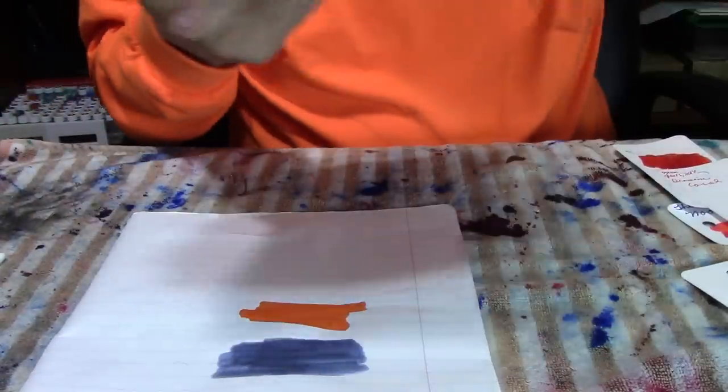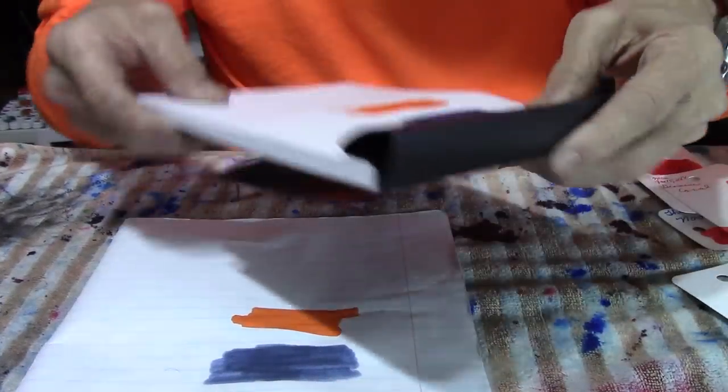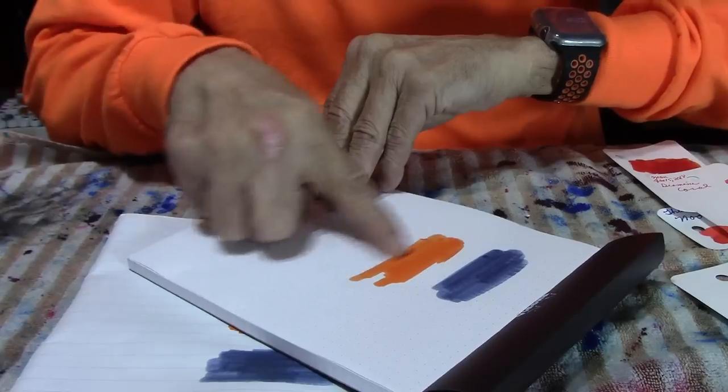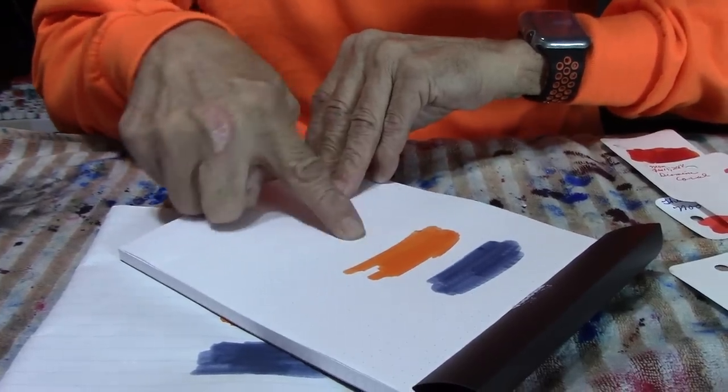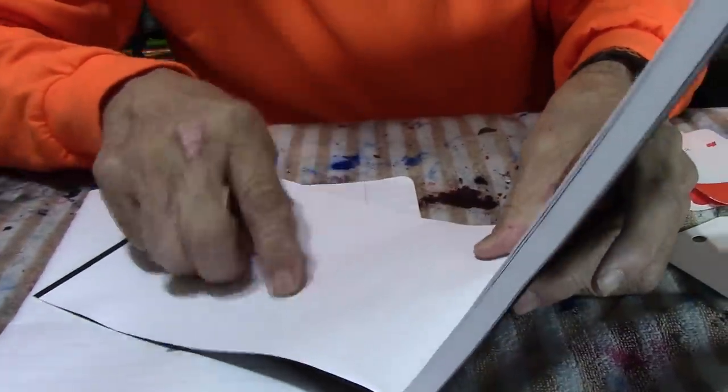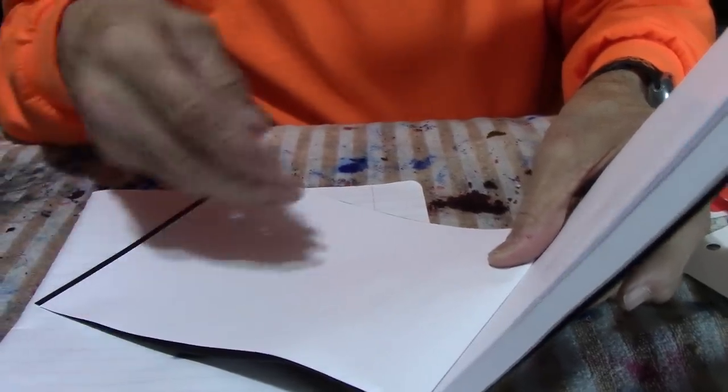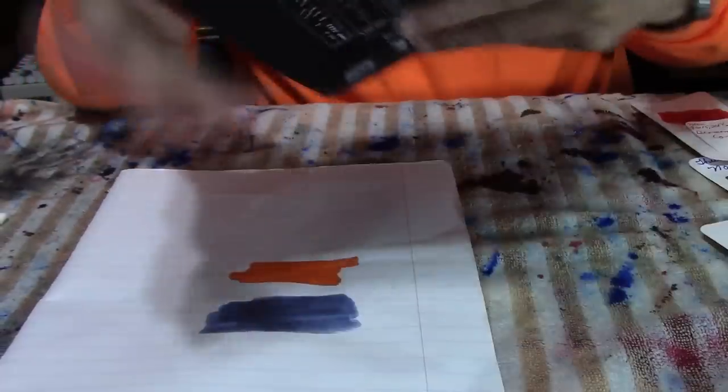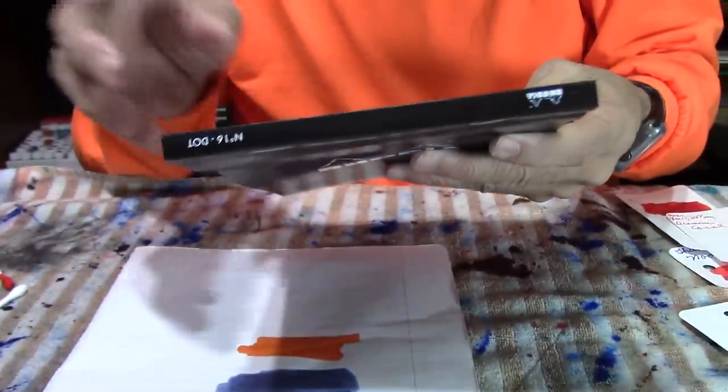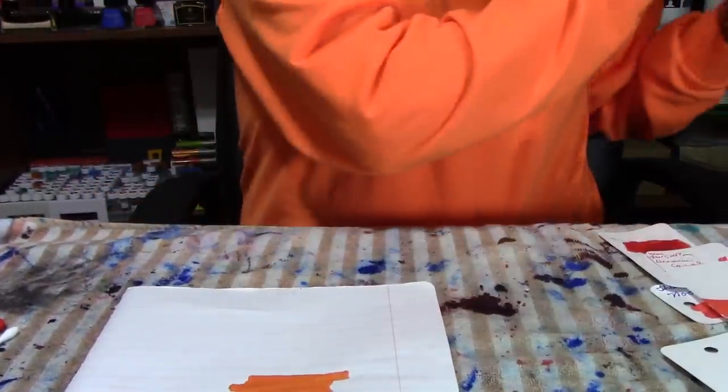There you have it. Oh, last but not least, I almost forgot. On the Rhodia dot grid, it looks really nice on the Rhodia. Really no show through, as well. But then this is 80 GSM paper. So, there you have it.